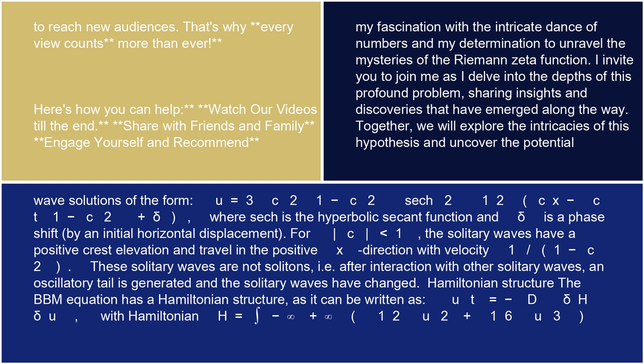For c < 1, the solitary waves have a positive crest elevation and travel in the positive x direction with velocity 1/(1-c²). These solitary waves are not solitons, i.e., after interaction with other solitary waves, an oscillatory tail is generated and the solitary waves have changed.